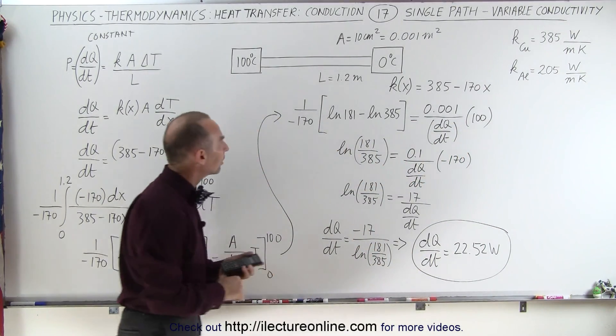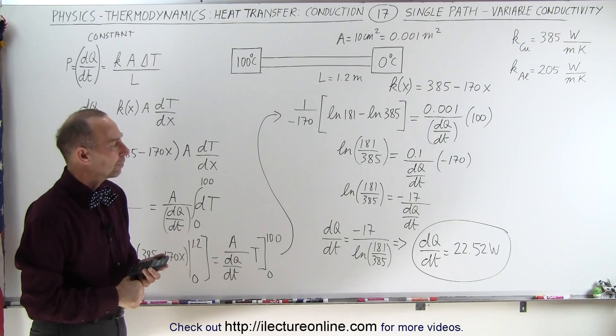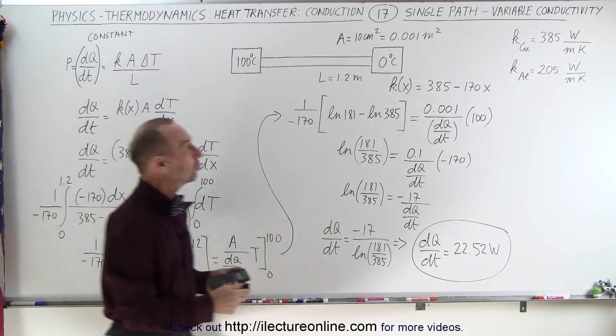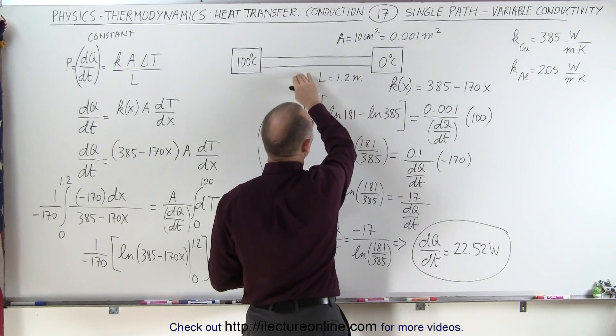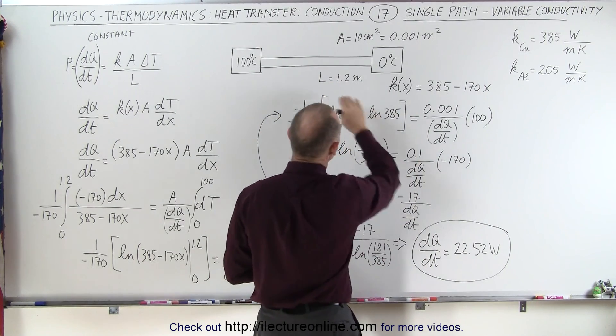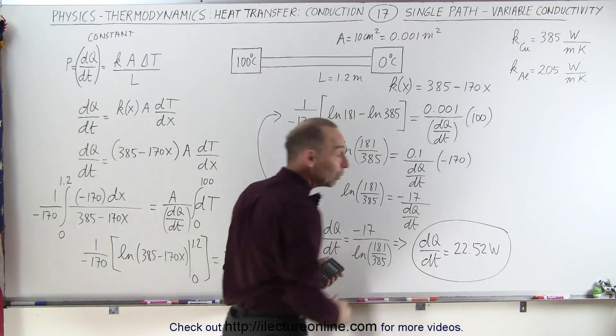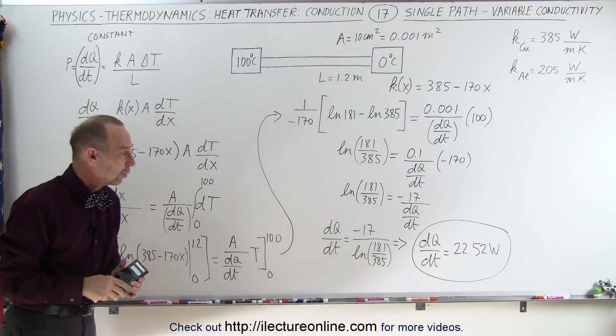And that's kind of what we would expect. Notice that we got a value between the two that I don't have them on the board anymore because if it was all copper, it would have been 32. If it was all aluminum, it would have been around 17. We got a value between the two. So that seems fairly reasonable.